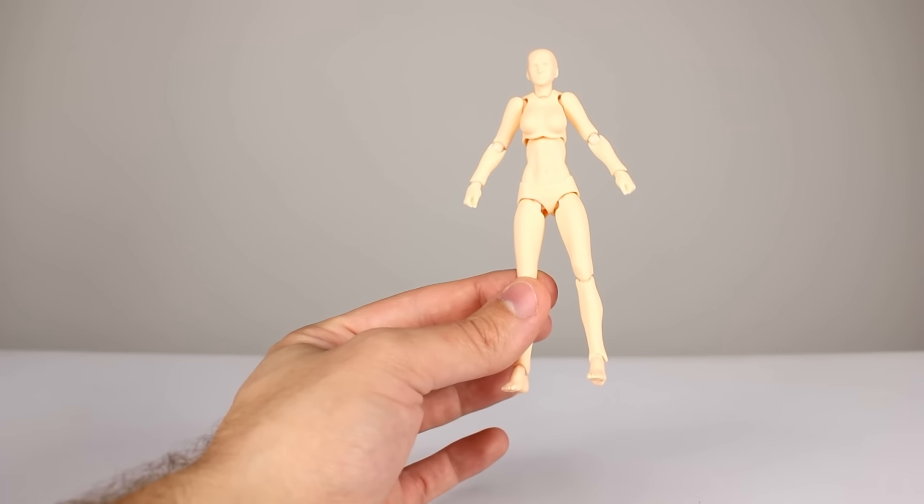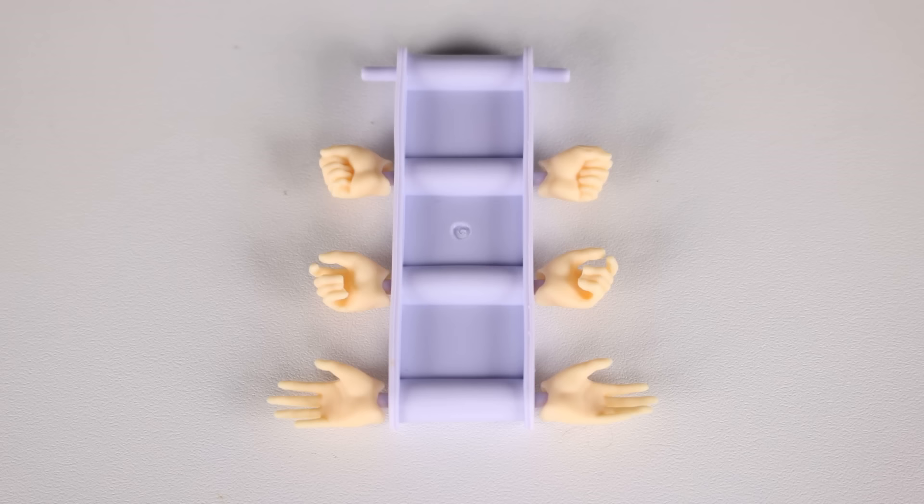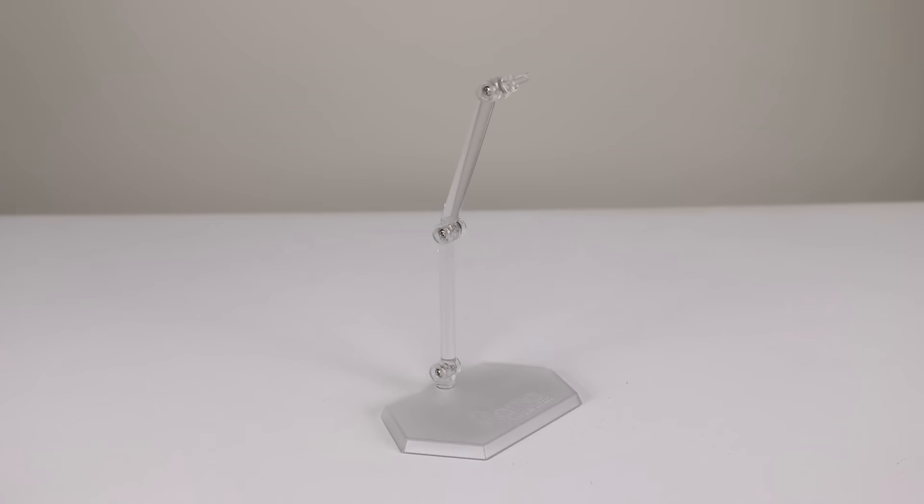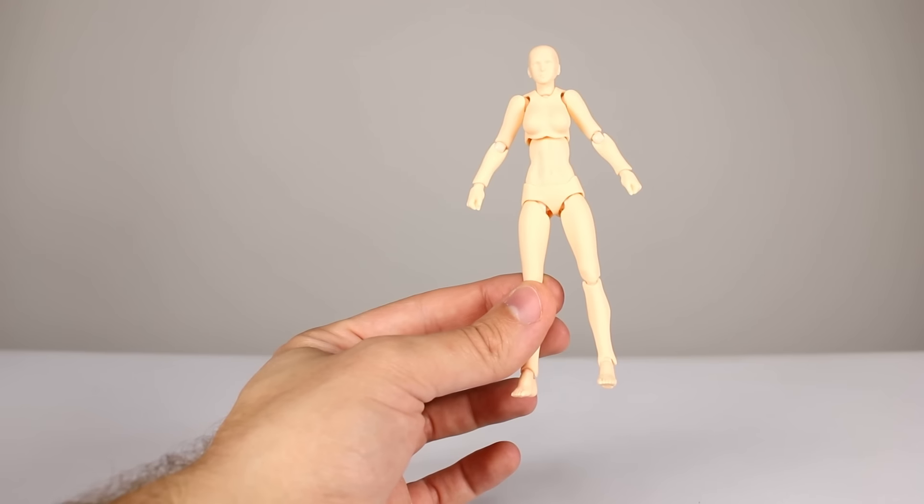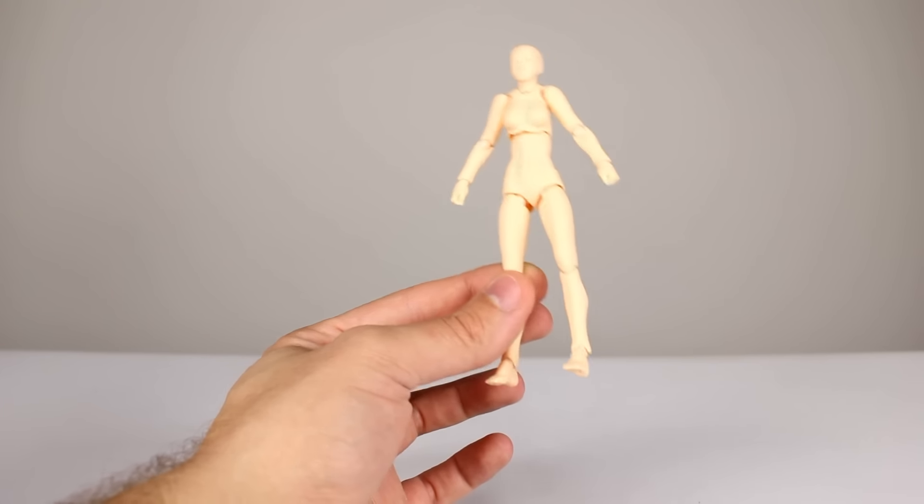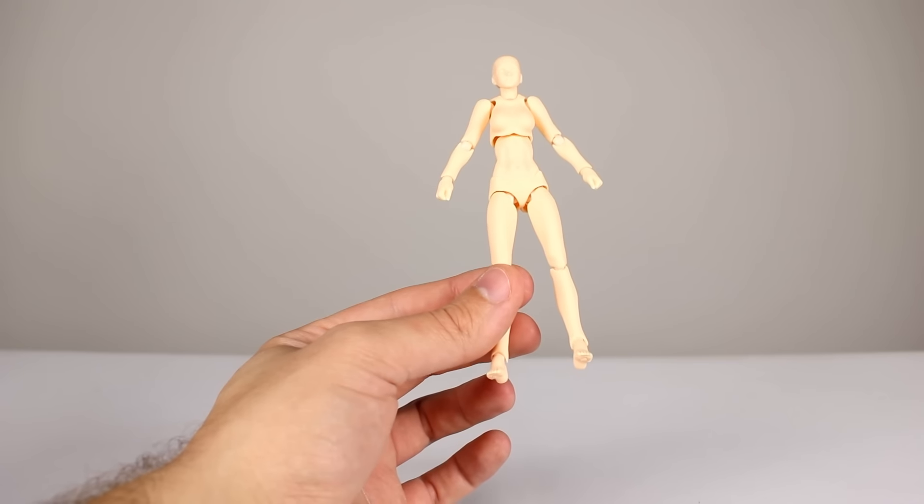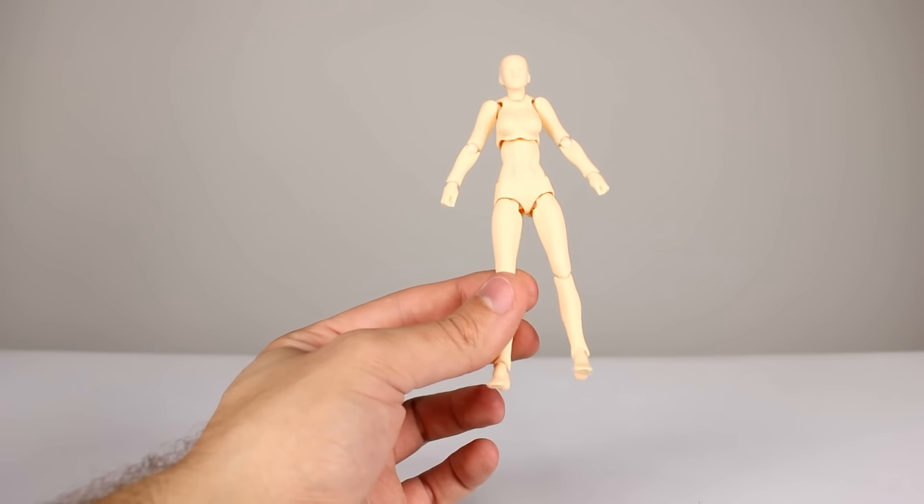Anyway, she does have a couple accessories. She has the two fist hands that come on her in the package, the two loose hands, and then two gripping slash maybe trigger finger hands depending on how you use them. And then of course we have the Figma display stand. And that's it. No more accessories. So very minimal figure, very minimal accessories, no paint job at all obviously. The plastics do all match though, so that's a good thing.